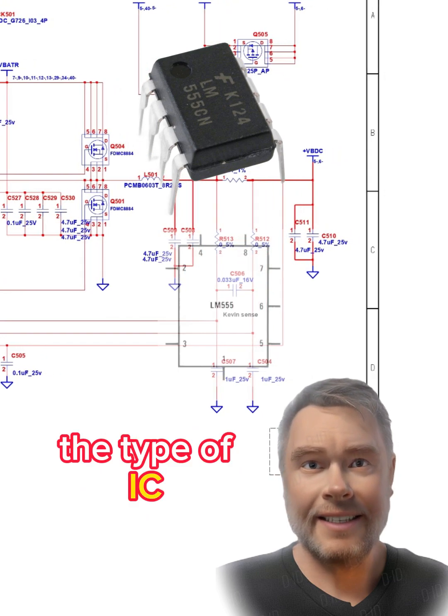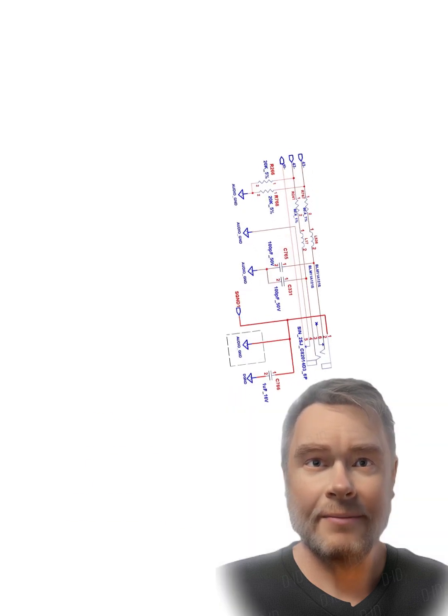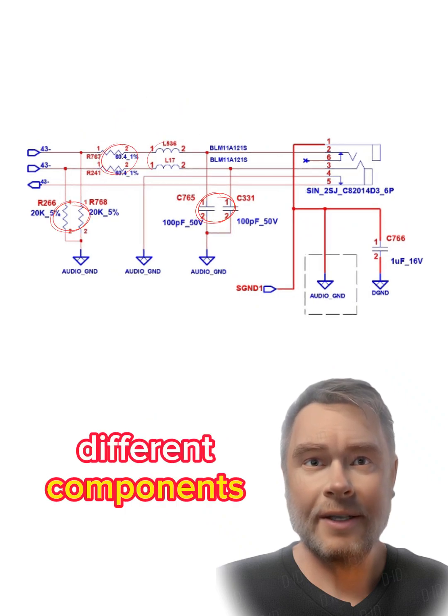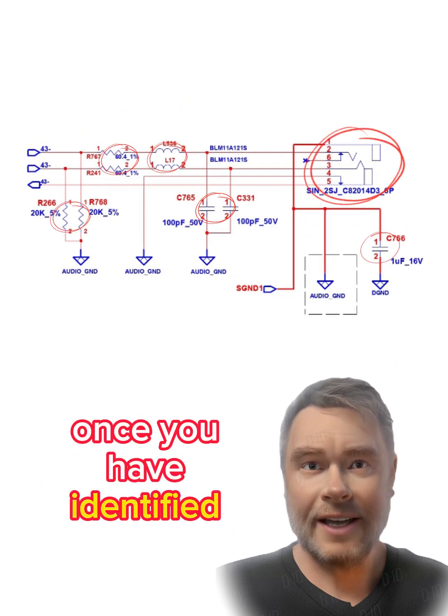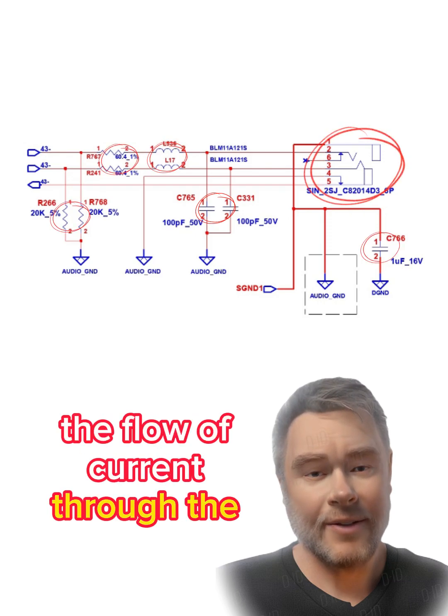The first step in reading a schematic diagram is to identify the different components. Once you have identified the components, you can start to trace the flow of current through the circuit.